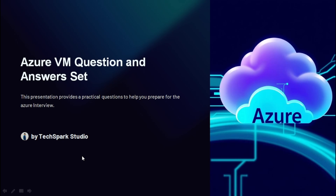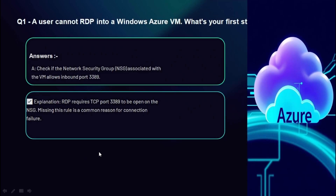Question 1: A user cannot RDP into a Windows Azure VM — what's your first step? The first step is to check if the Network Security Group (NSG) attached to the VM or subnet allows RDP traffic on port 3389. RDP requires TCP port 3389 to be open on the NSG. A missing rule is a common reason for connection failure — if this port is blocked in the NSG rules, no remote connection can be established even if the VM is running fine.